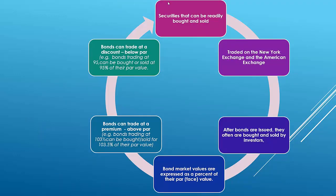Bonds aren't purchased directly from the issuer like Caltrans — they're traded on a secondary market similar to stocks, such as the American Exchange or New York Stock Exchange. After issuance, they're frequently bought and sold by investors. The market rate can differ from the stated rate on the bond, which affects cash flows.